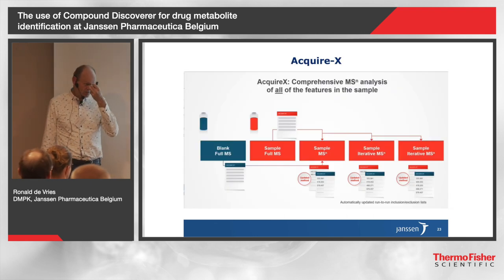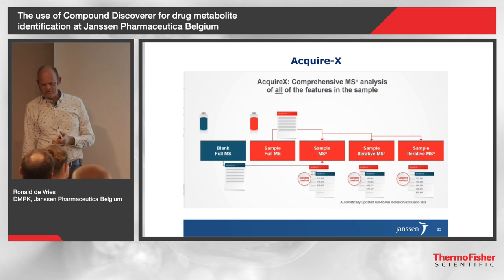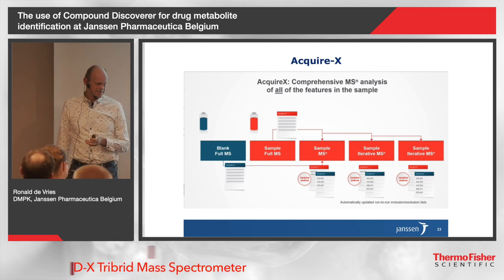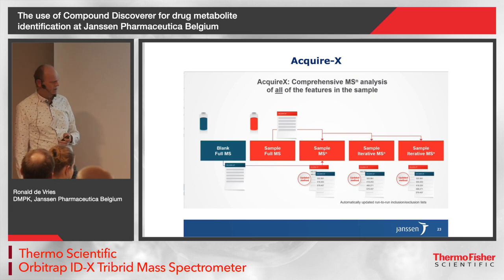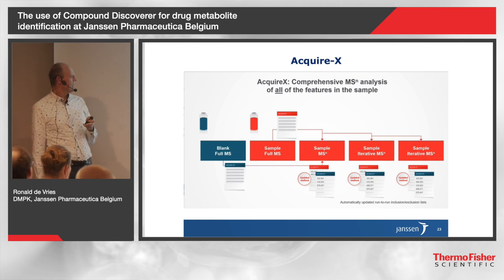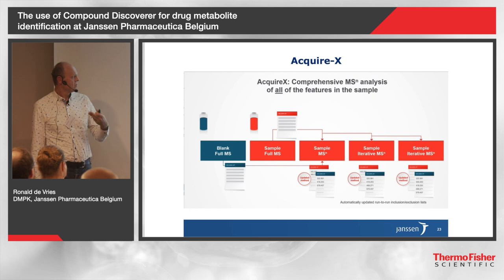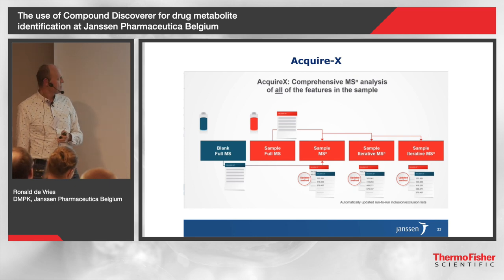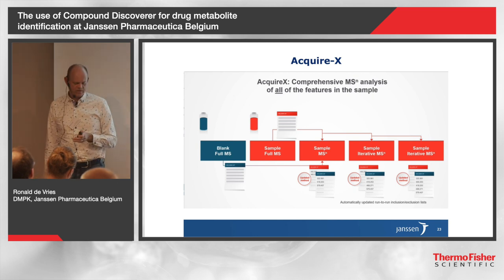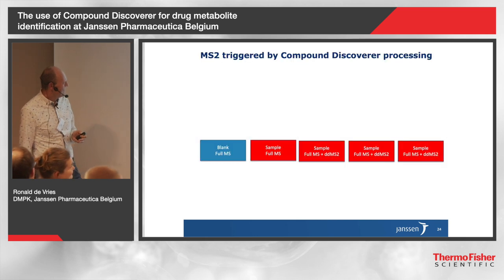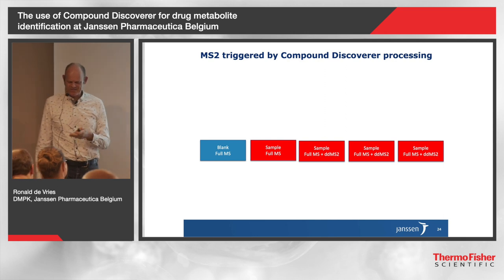At ASMS 2018 we got AcquireX. So if you buy a nice new tribrid Orbitrap IDX, I think it comes with AcquireX, which is really neat. What it does — for people who haven't seen this yet — is it injects a blank sample and the actual sample. From the blank it generates an exclusion list, and from the sample an inclusion list. Then based on these lists, it does MSN with a new injection. Every MSN that has triggered is put on an exclusion list, and re-injections are done until all the hits on the inclusion list have been covered. Only one disadvantage: not available for Q Exactive, at least not yet — maybe for Christmas.